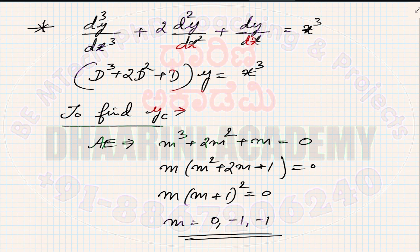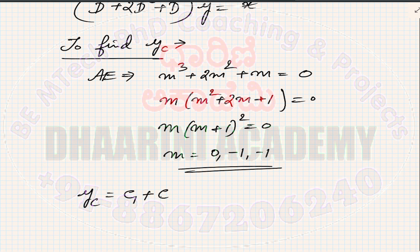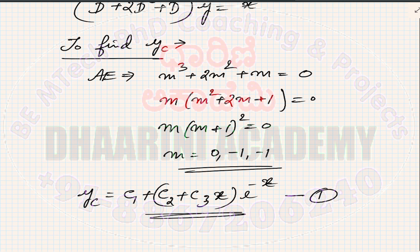The first root m = 0 is real and distinct; the second and third roots m = −1, −1 are real and repeated. For real and distinct root 0: gives e^(0·x) = 1. For repeated roots −1: we write (c₂ + c₃x)e^(−x). Therefore yc = c₁ + (c₂ + c₃x)e^(−x). This is equation 1.